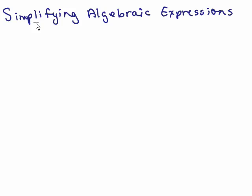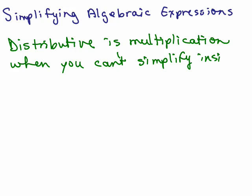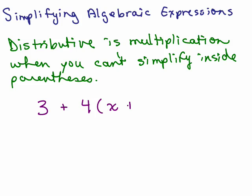Okay, first I want to remind you about the distributive property. The distributive property is basically a way to multiply. It's really a multiplication, so it's a way to multiply when you can't simplify inside the parentheses. So let's say we had a problem like this: 3 plus 4 parentheses x plus 5.